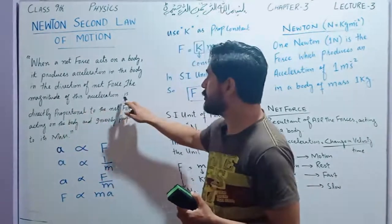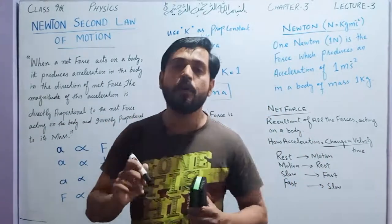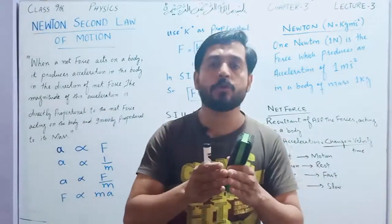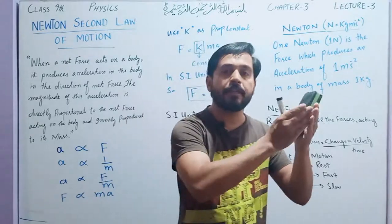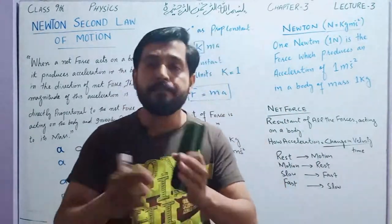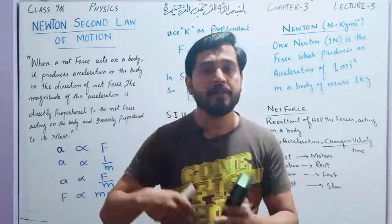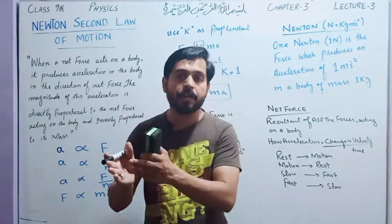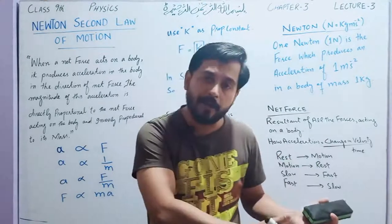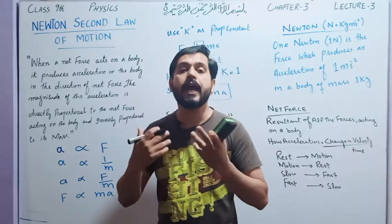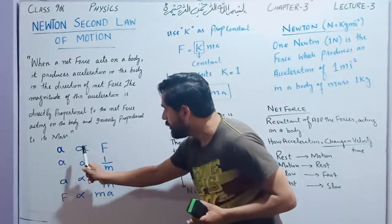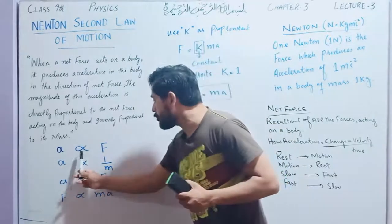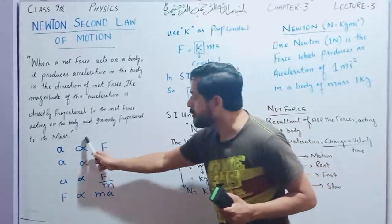The magnitude of this acceleration is directly proportional to the net force. When there is a direct relation between two physical quantities, if one increases, the other also increases. So acceleration is directly proportional to net force. In this case, acceleration is the dependent quantity — it depends on the force. Mathematically, acceleration is directly proportional to force. This symbol represents proportionality between two physical quantities. So acceleration is directly proportional to force.